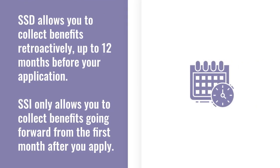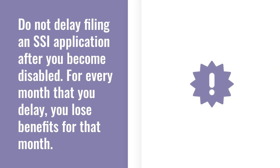Finally, SSD and SSI use different time limits to determine how far back you can go to collect your benefits. For SSD, it's possible to collect cash benefits going back 12 months before the date you filed your SSD application. SSI is stricter — you cannot collect SSI benefits until the first month after you filed your SSI application. The takeaway is that you should not delay filing an SSI application after you become disabled, because you lose the opportunity to receive benefits for every month you delay.